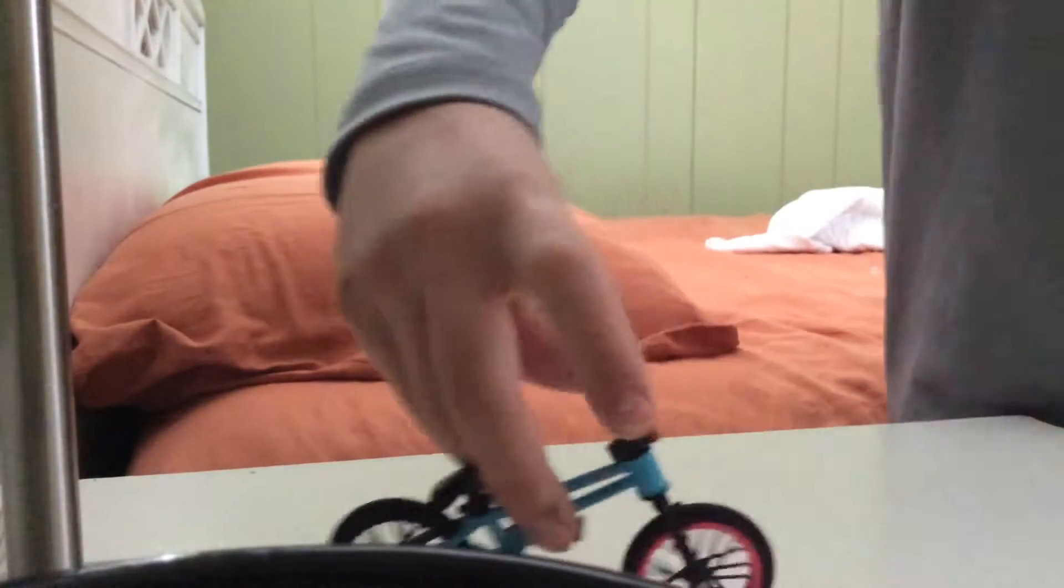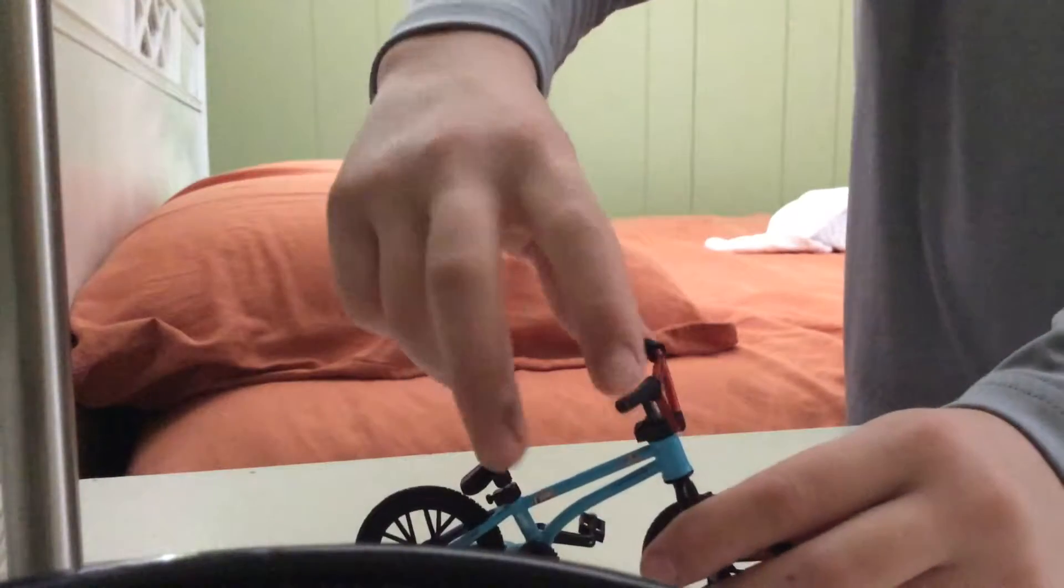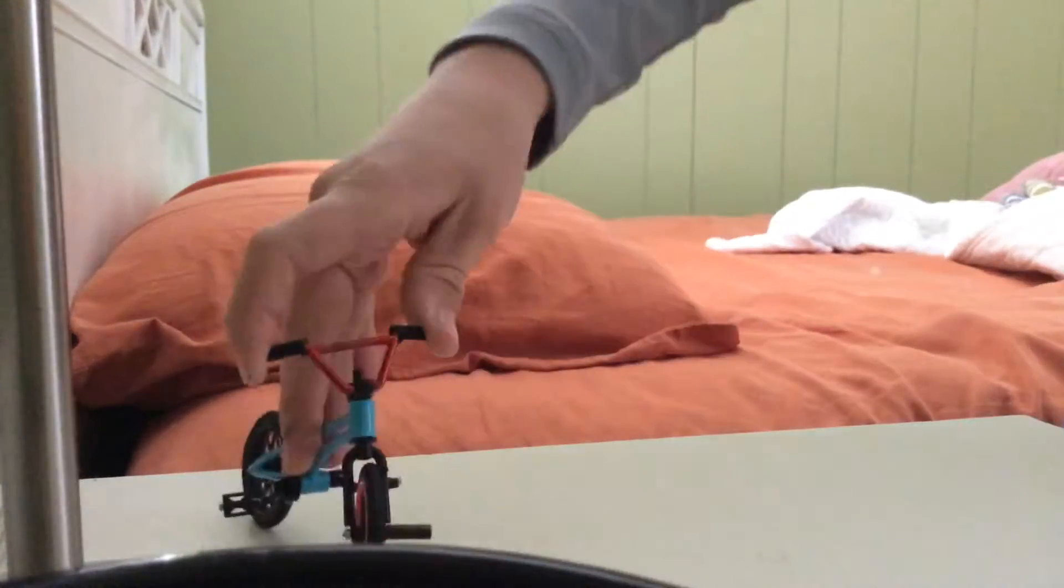The basic way you want to hold it is take your pointer and thumb, put them on the bars just like this. Next you're going to take your middle and the index and put it on right here. It doesn't have to be on the pedals.